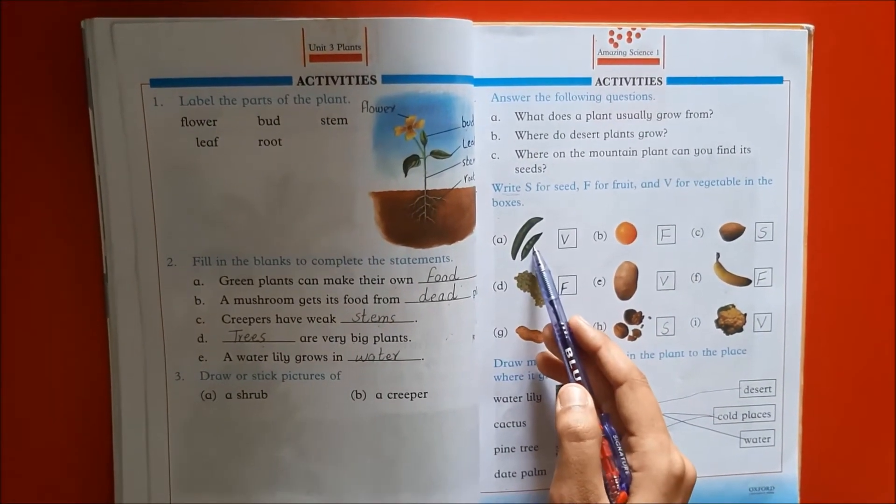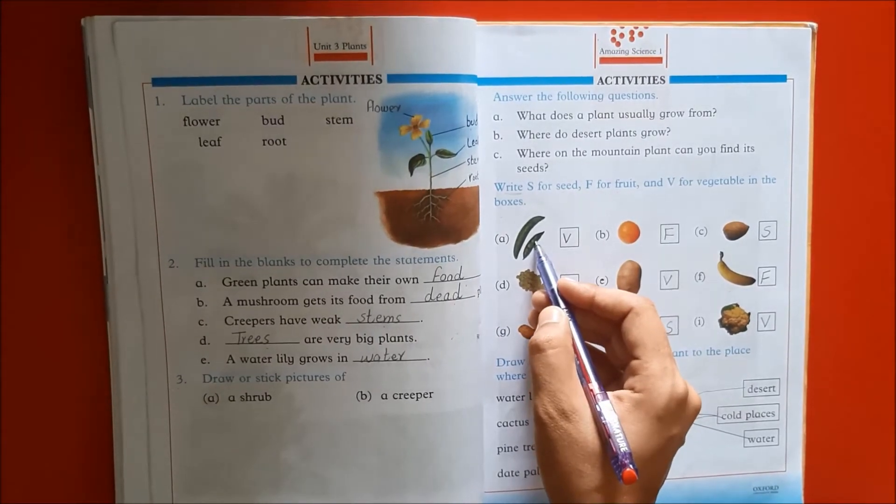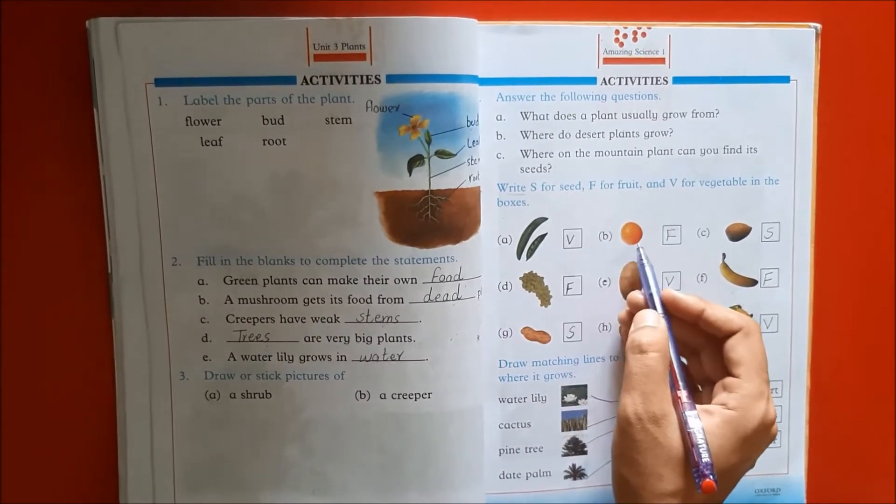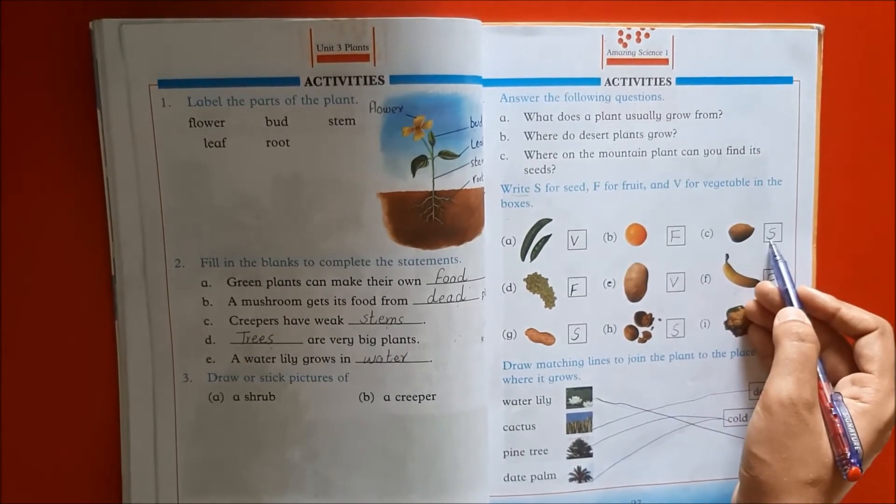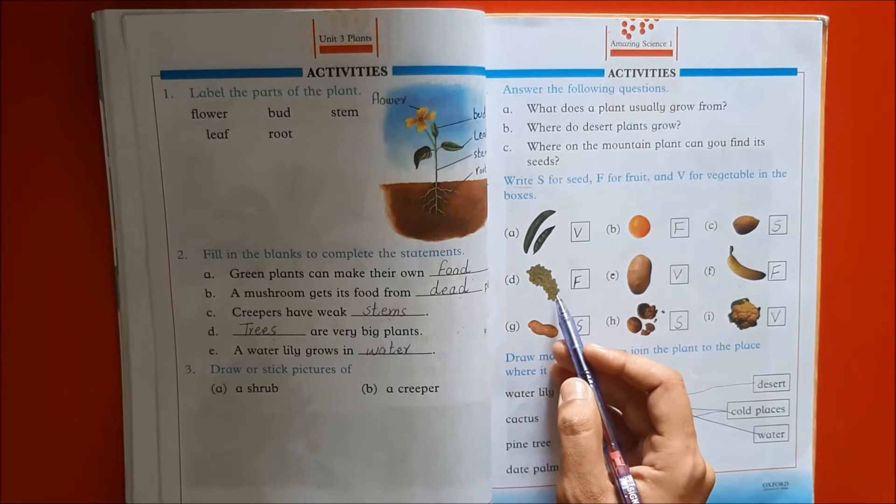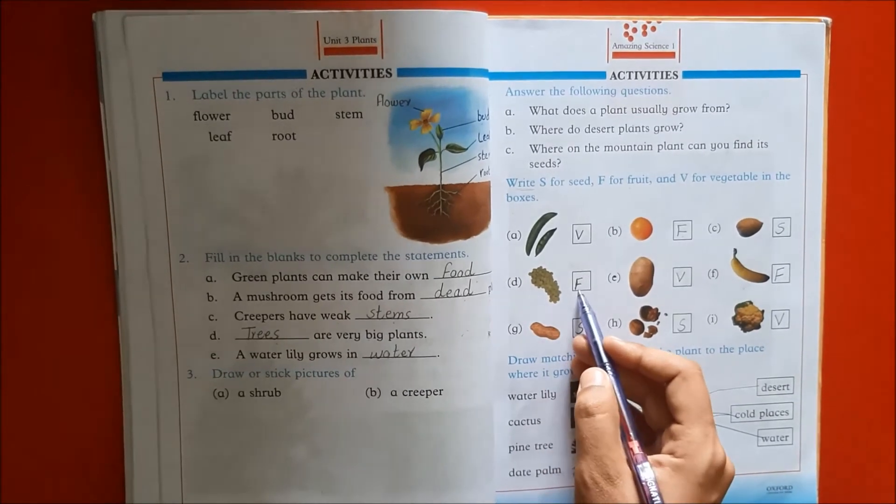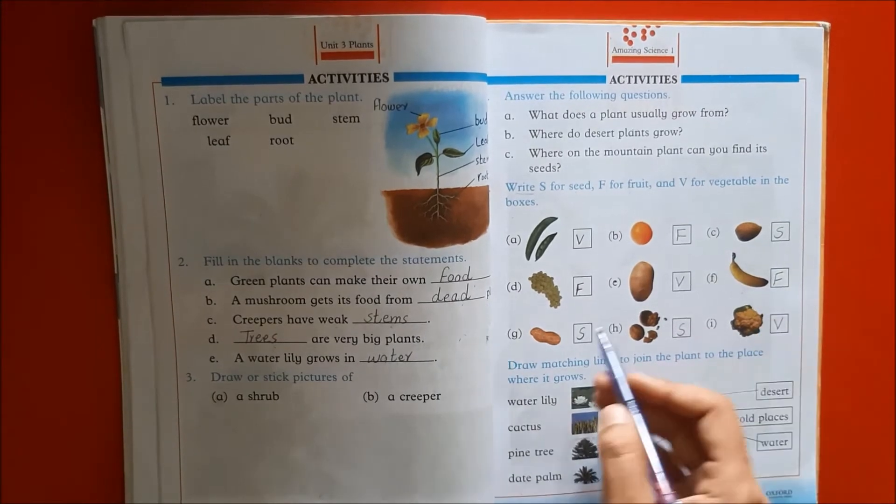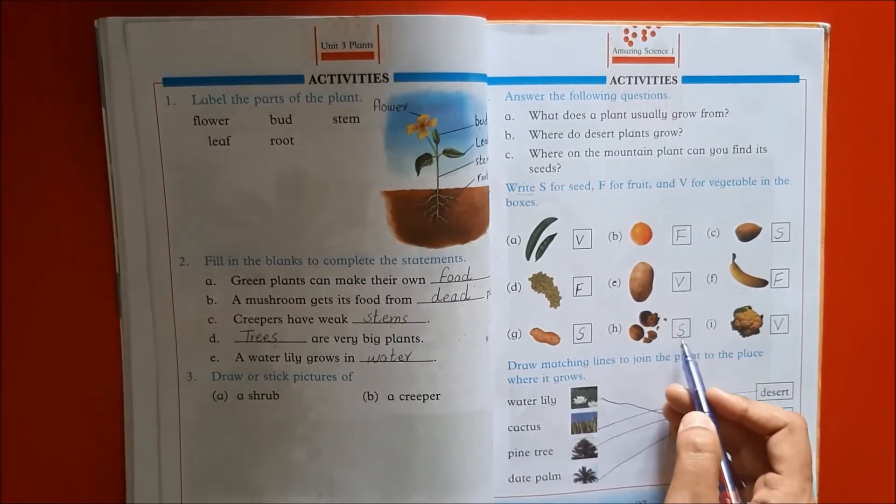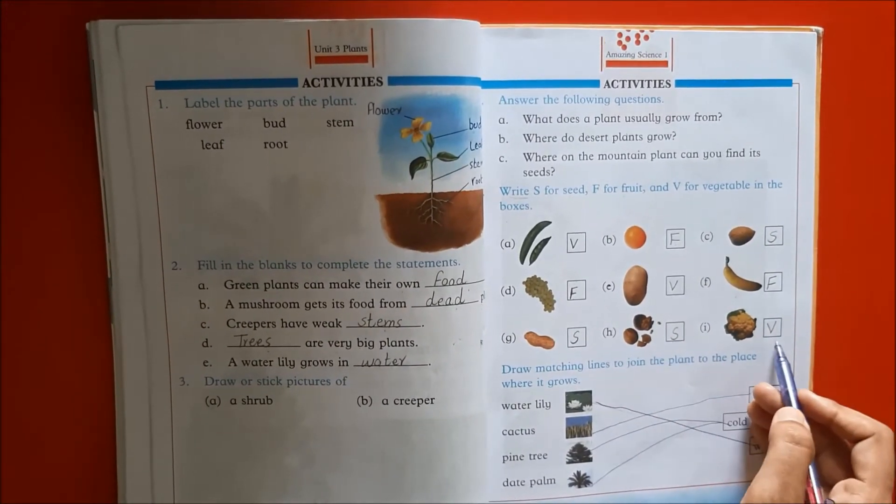So this one, first one, we know that vegetable, V. Fruit, F. Almond, seed, S. Fruit, F. V vegetable. Fruit. Seed. This one also seed and vegetable.